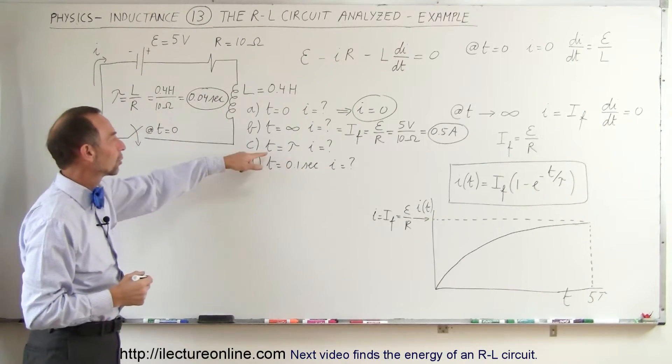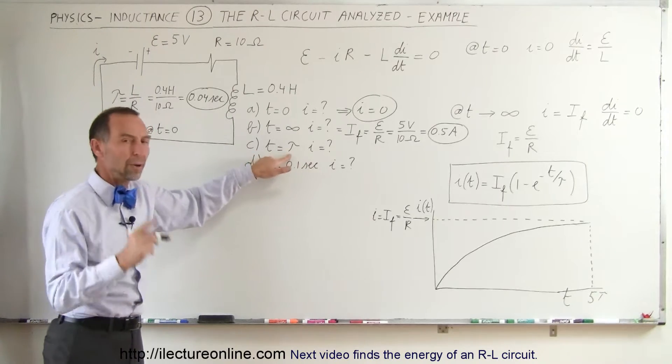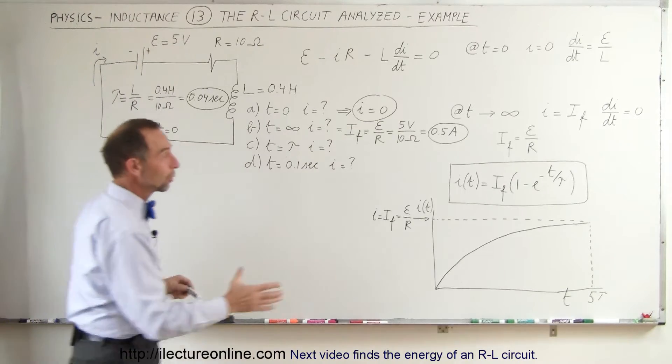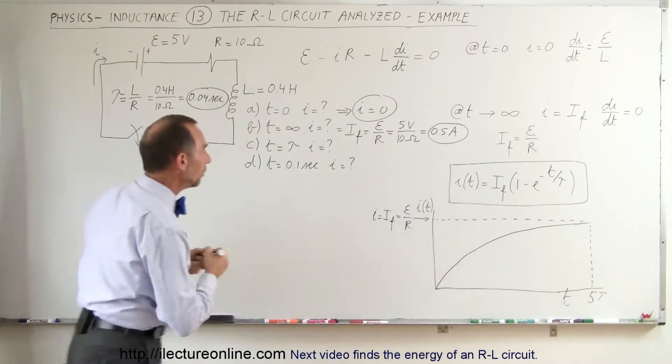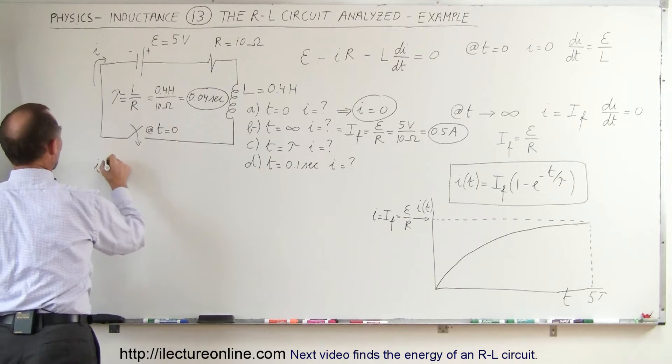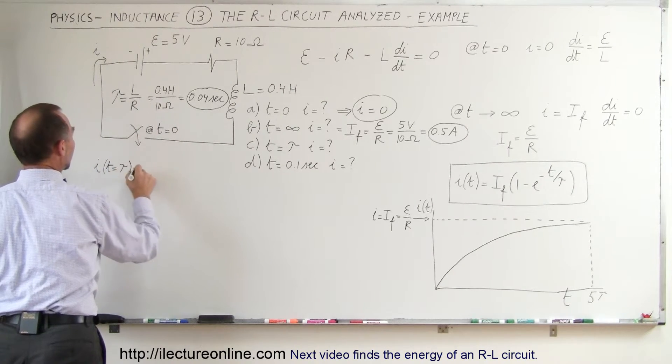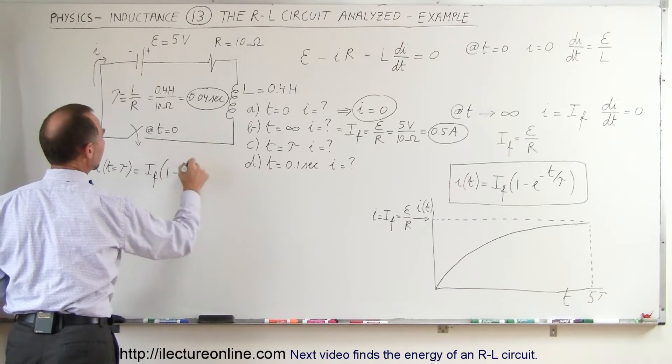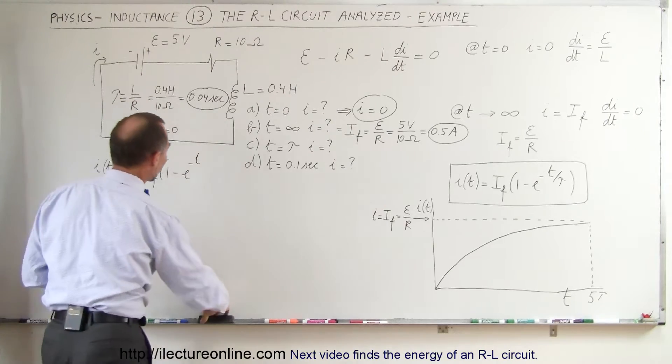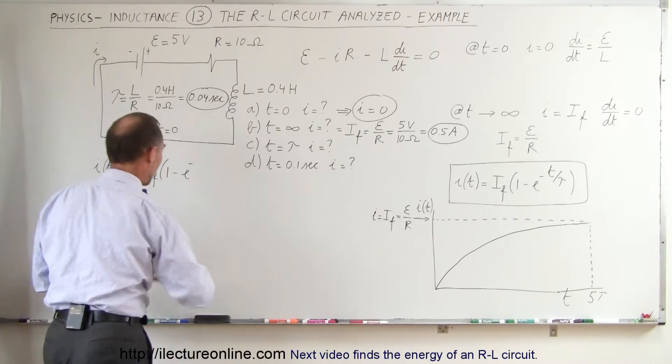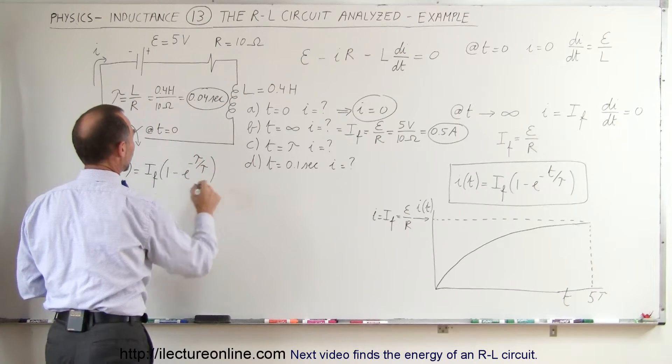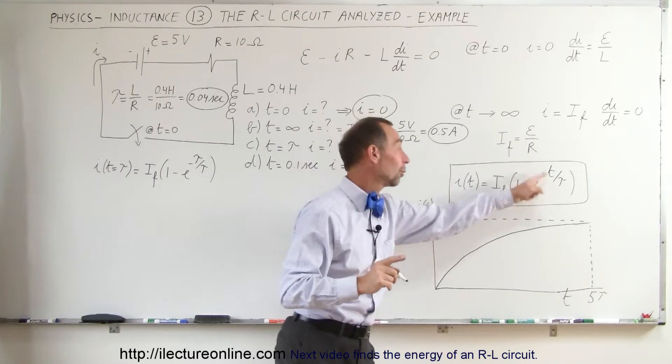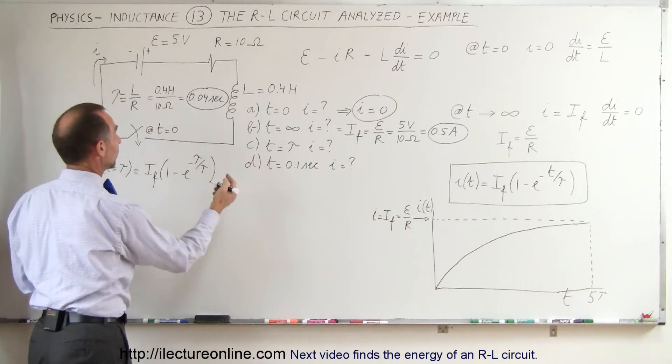Now we have to find the current when T is equal to tau, when T is equal to one time constant, which in this case would be 0.04 seconds. So we're going to take our equation that we derived in the last video. We can say that I, when time is equal to one time constant, that would be equal to the final current times 1 minus E to the minus T over tau. Now since I said that T was going to be equal to tau, this becomes tau divided by tau. So what I've done is I've replaced the time in my equation by what time is equal to, which is equal to one time constant. So tau divided by tau is minus 1.